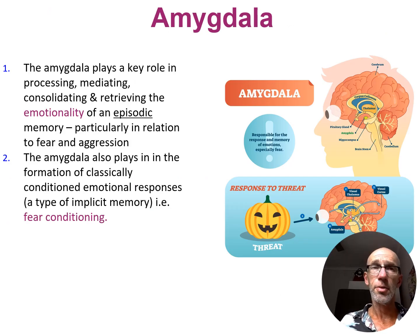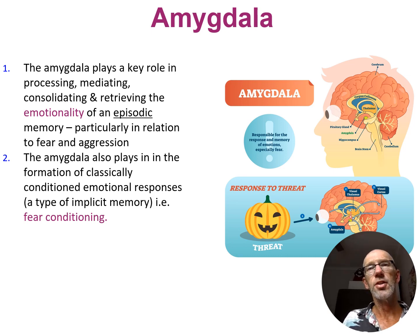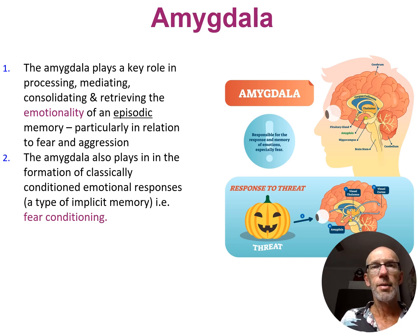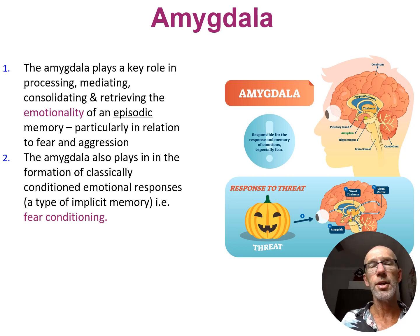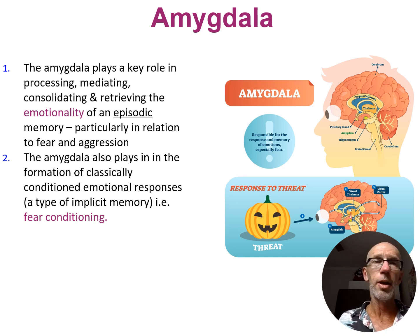Now the amygdala in terms of explicit memory is probably the most simplistic of the three to explain, because it simply mediates, processes, consolidates, and is involved in retrieving the emotionality of the event. But unlike the hippocampus, it also plays a role in implicit memory fear conditioning — not the actual movements of a classically conditioned response, which would be the cerebellum, but the actual association. This will come into play more for Unit 4 when we look at the phobia unit.